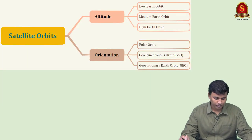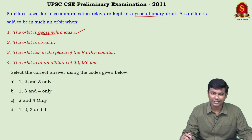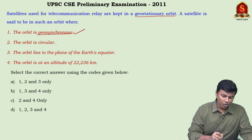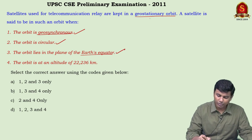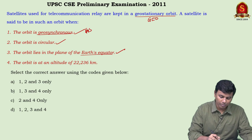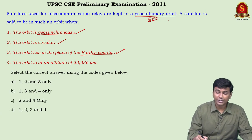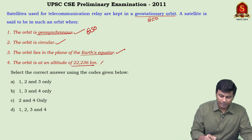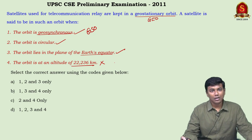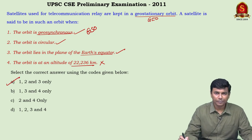Looking at the statements: the orbit is geosynchronous — correct, geostationary earth orbit is a type of geosynchronous orbit. The orbit is circular — correct. The orbit lies in the plane of Earth's equator — correct. The fourth statement says the orbit is at an altitude of 22,000 kilometers — wrong, it should be 22,000 miles or 35,000 kilometers. So statements one, two, and three are correct; the answer is 1, 2, and 3.